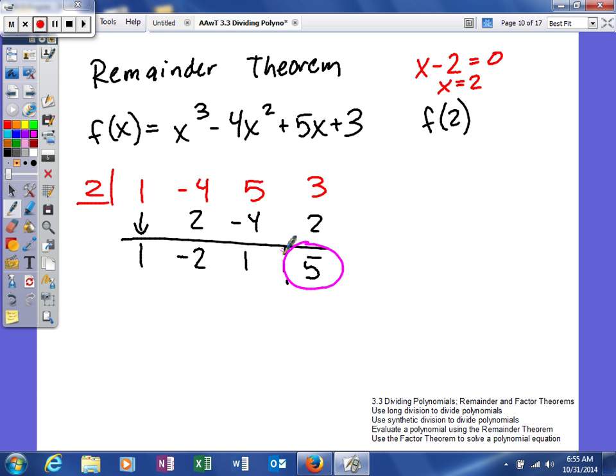So obviously this divisor is not a factor of this dividend because it doesn't go into it evenly. The remainder would have to be 0 for that to be the case. But like I said, the remainder theorem is basically a way for us to figure out the remainder in a more succinct way.